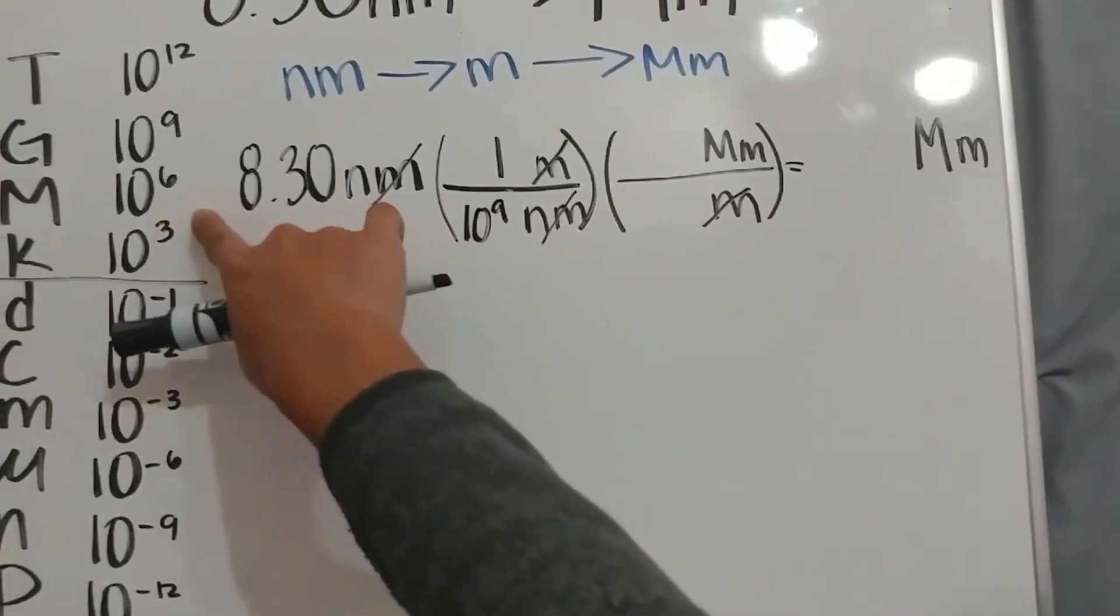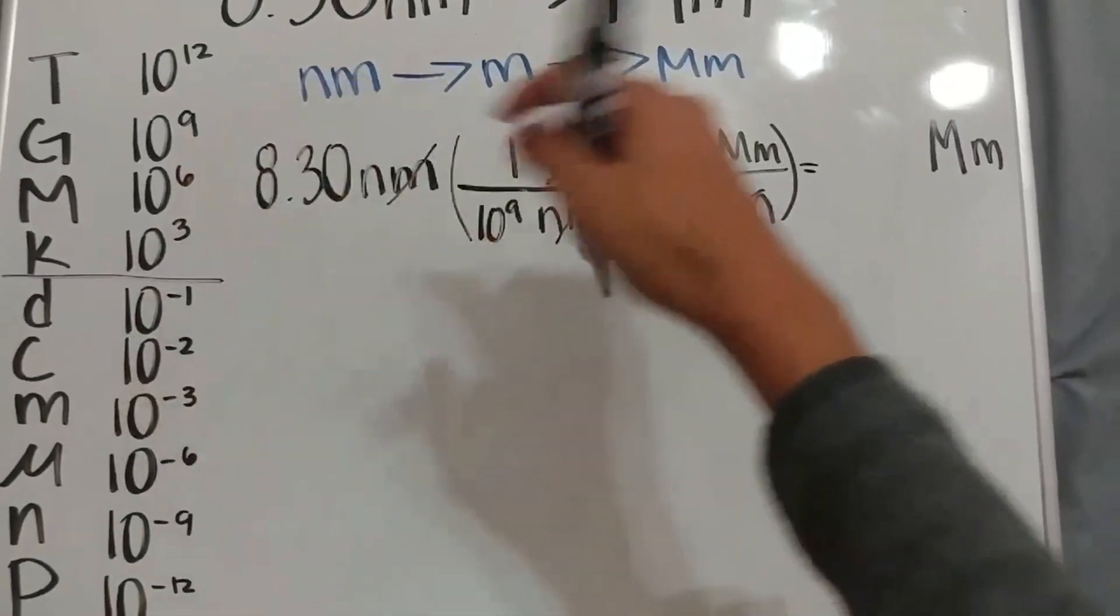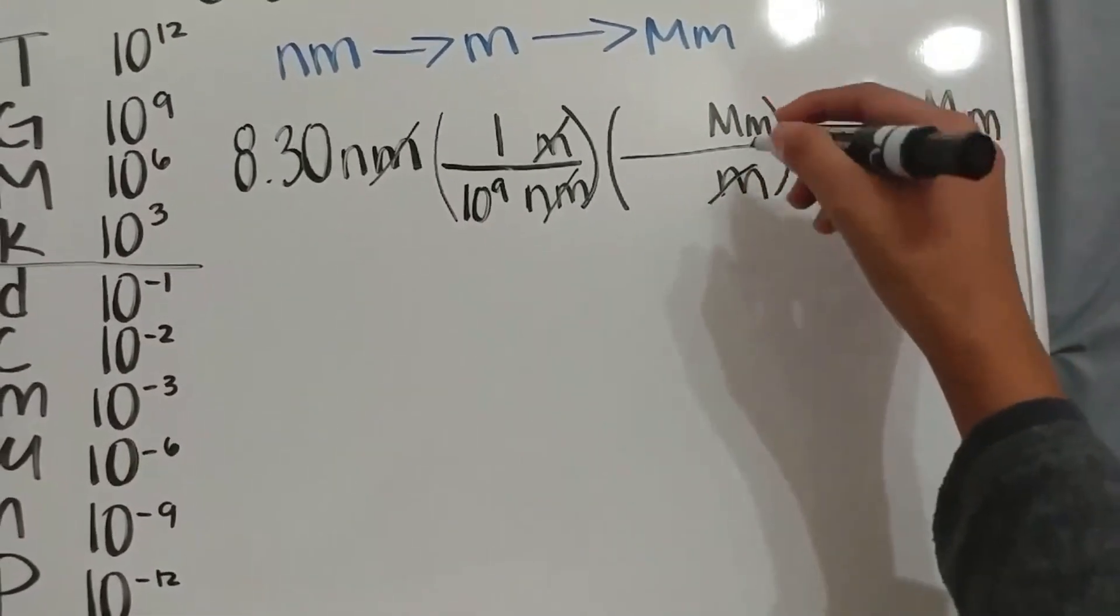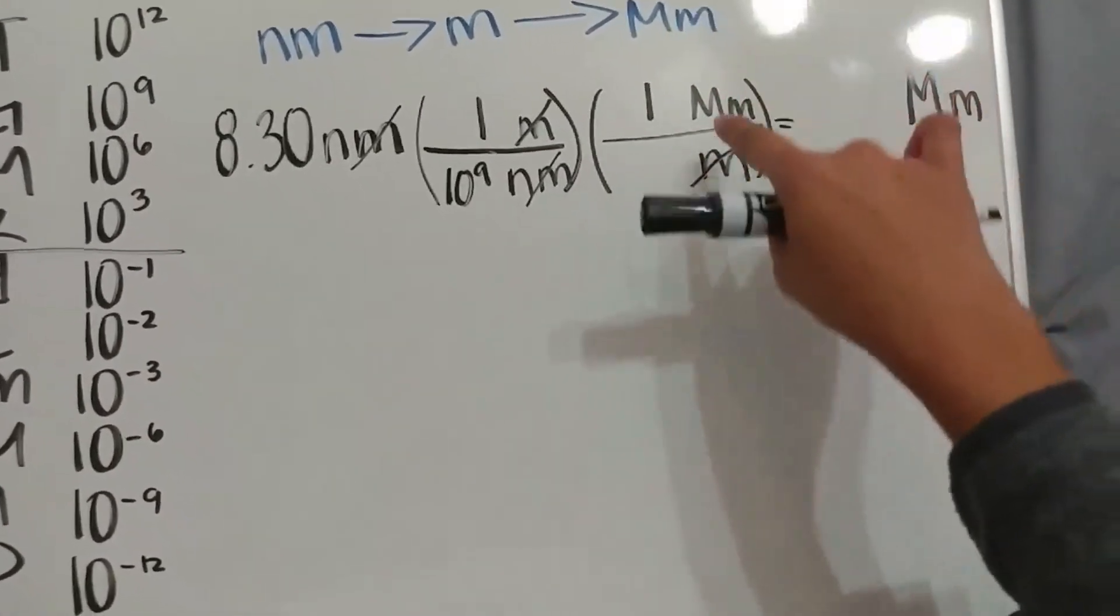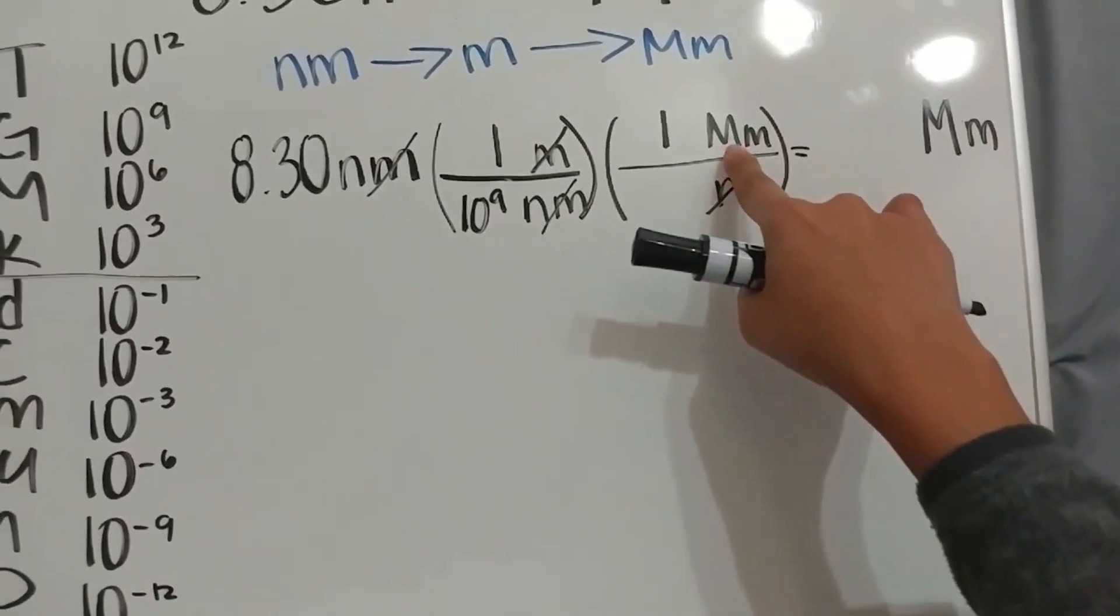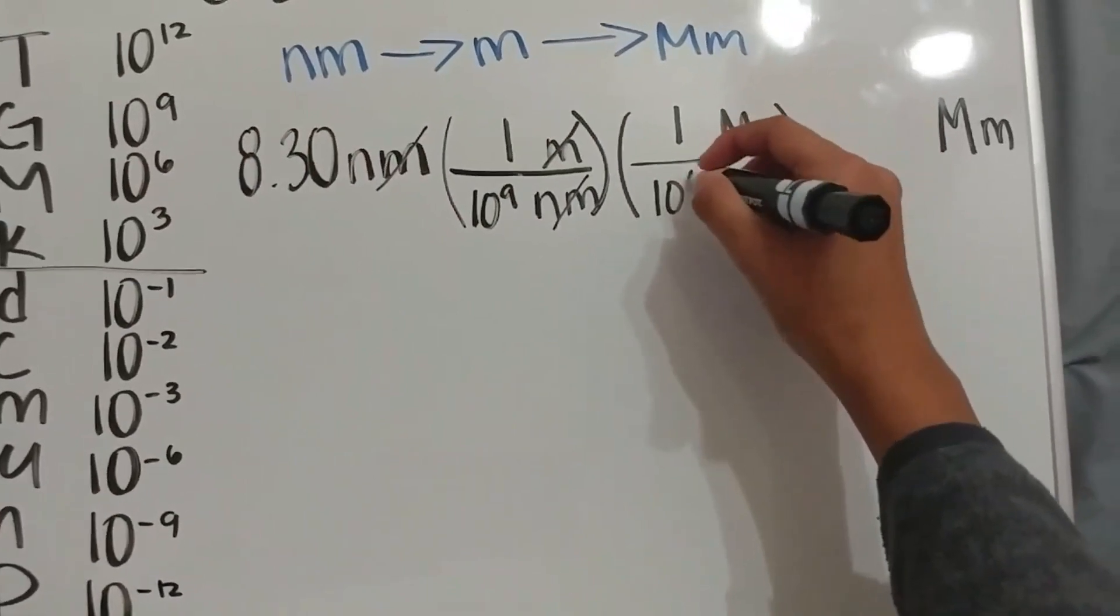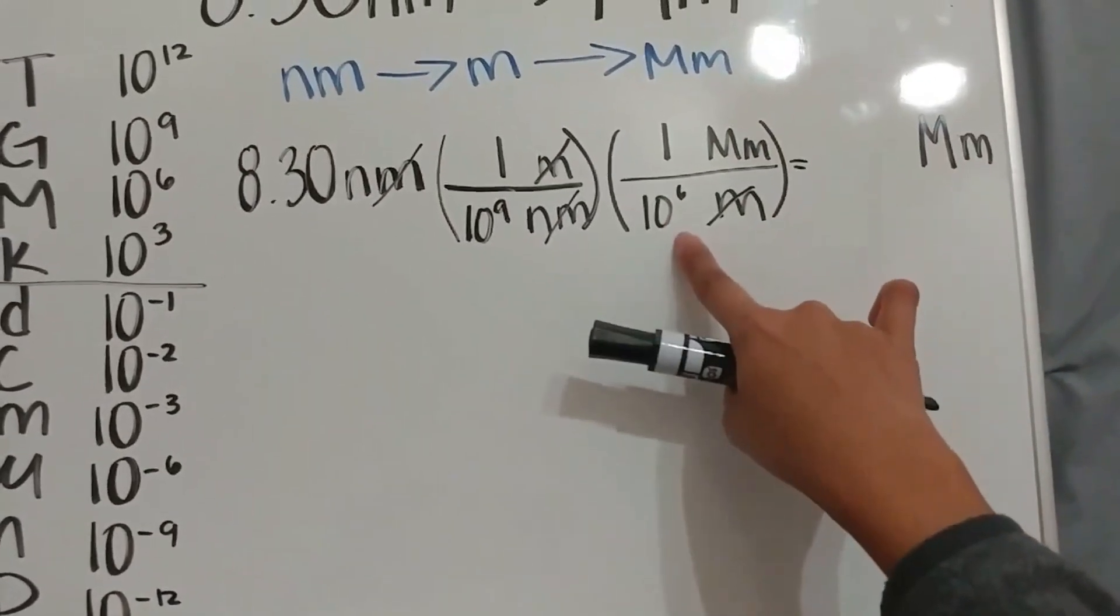The same thing goes for the megameter over meter. Megameter, mega, is 10 to the 6th, so it would be bigger, therefore, it would have a 1, and the prefix mega is 10 to the 6th, and it's already positive, so we just input it as it is at the denominator.